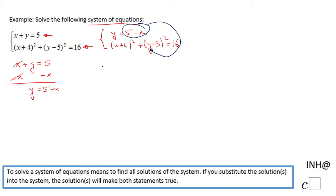So the second equation becomes (x + 4)² plus, and again that y I said is going to be replaced with 5 minus x, and then we have this minus 5 equals 16. Don't forget the square here.